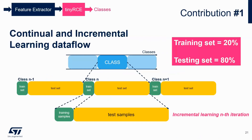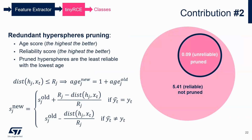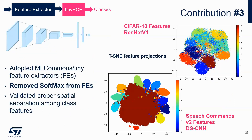So what are the contributions we brought here? First, we changed completely the learning paradigm. We learn class by class — keyword one: learn, test; keyword two: learn, test; and so on. We use 20% of data — a very minimal amount — to support the learning, and mostly the data are used for testing: 20/80 percent, vice versa compared to the typical 80/20 or 70/30 used for backpropagation. The second contribution is that we associate to each hypersphere an aging score and a reliability score, which allows us to prune hyperspheres that are redundant. Only the most important ones are kept; otherwise there is an overpopulation of hyperspheres.